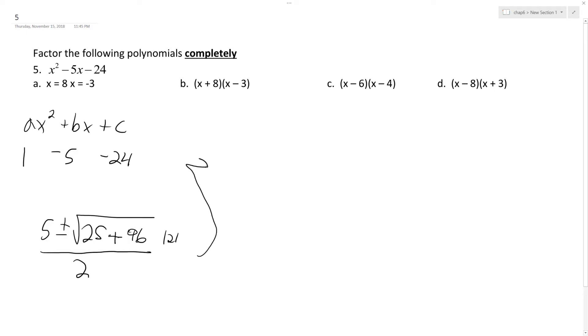This is 5 plus or minus 11 over 2. So we end up with negative 6 over 2 and 16 over 2.